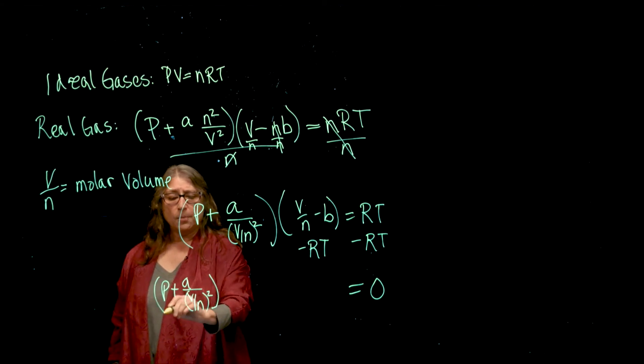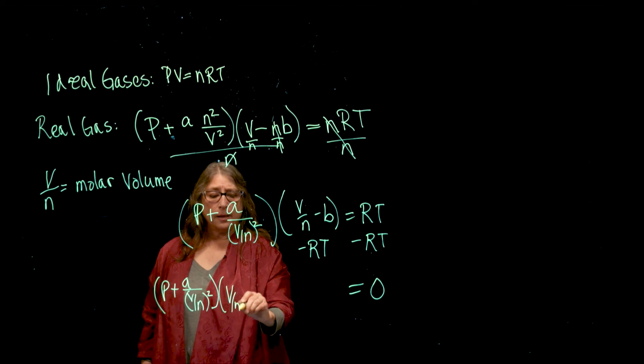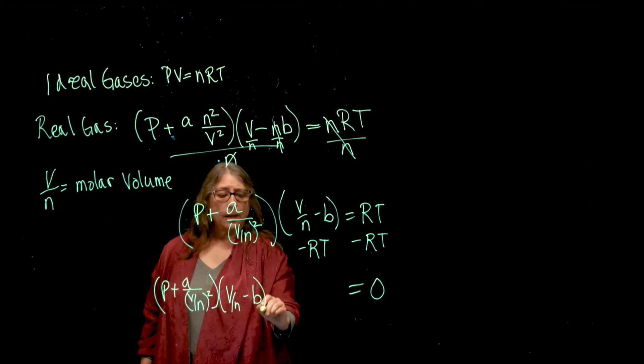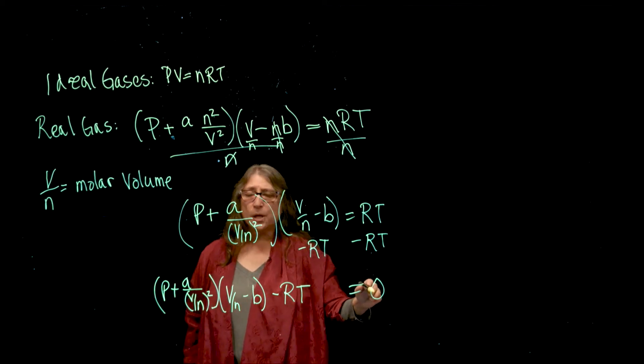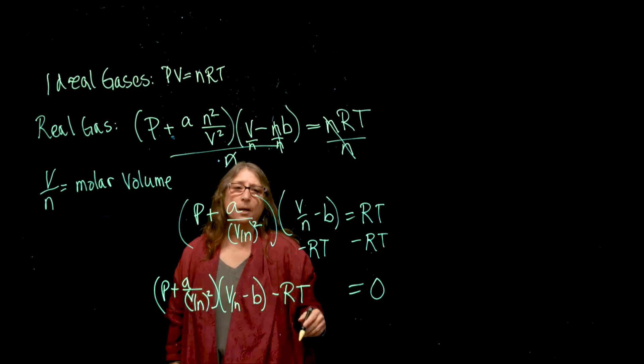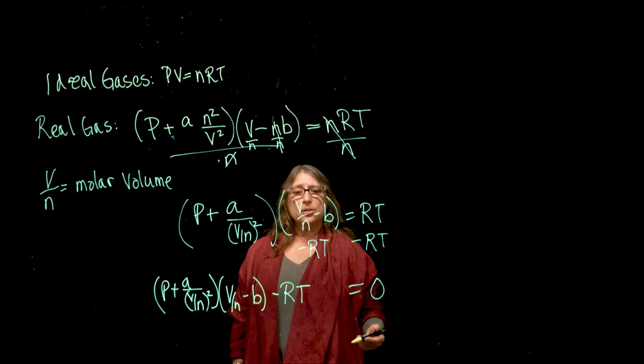I have to multiply that by V over n minus B, and I'm going to subtract RT. And that whole expression is equal to 0.